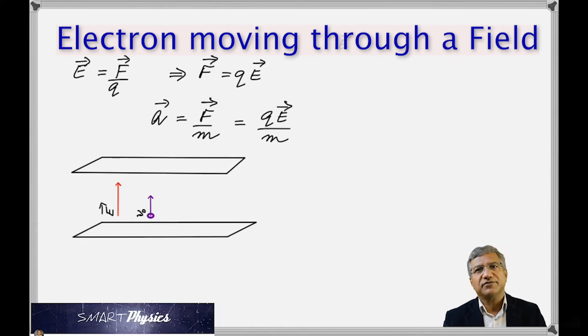Well, the electron is a negative charge, so the force acting on the electron will be opposite to the field, which means its velocity is going to decrease. It's going to be decelerated.